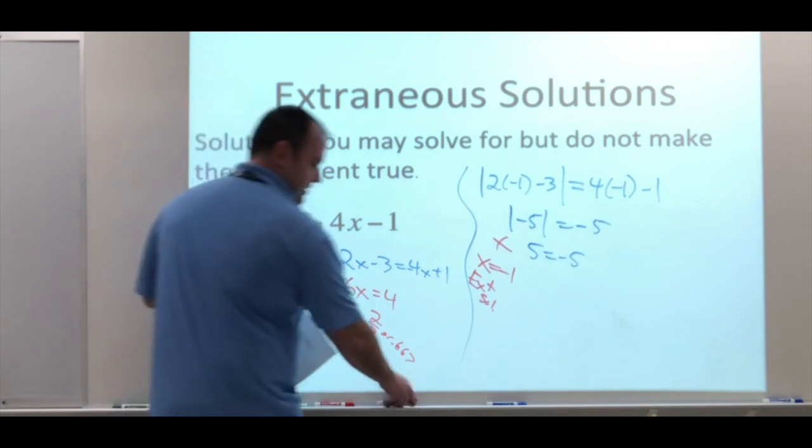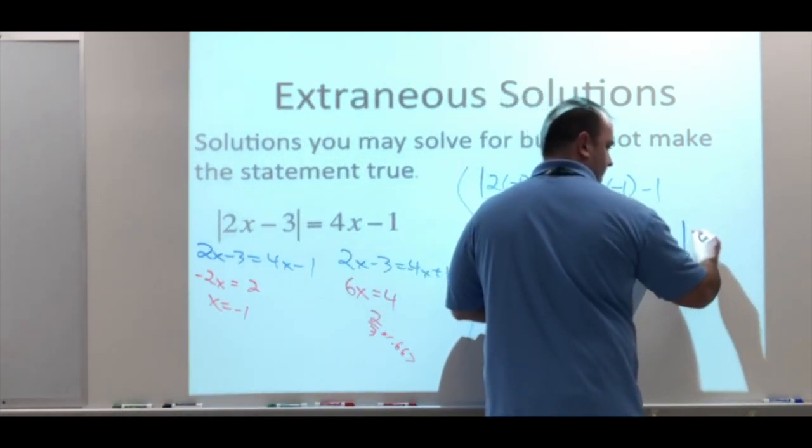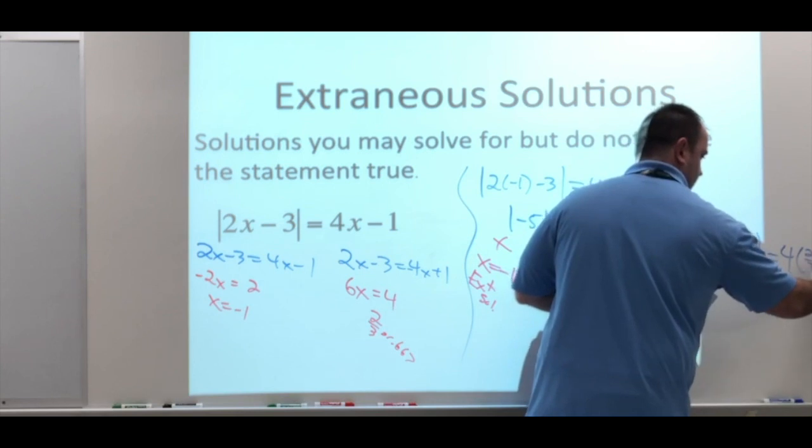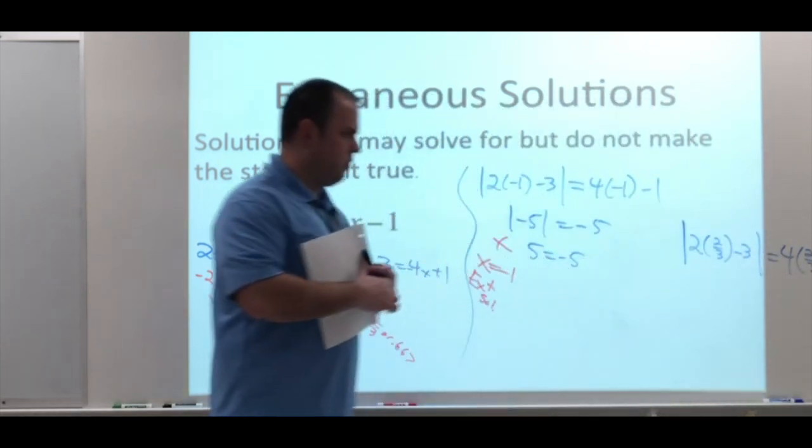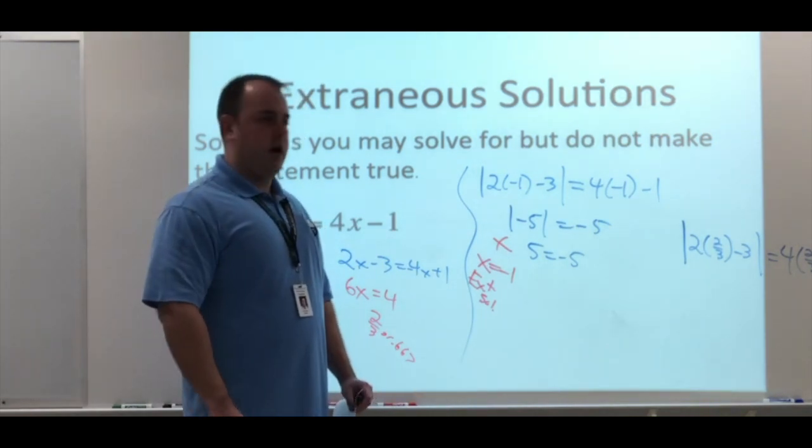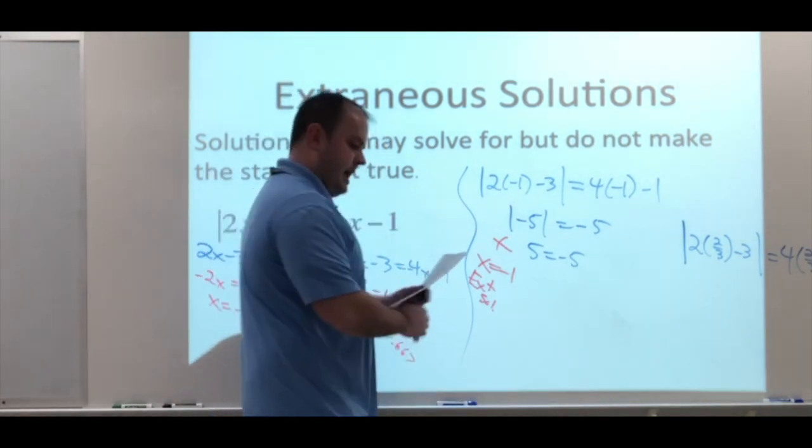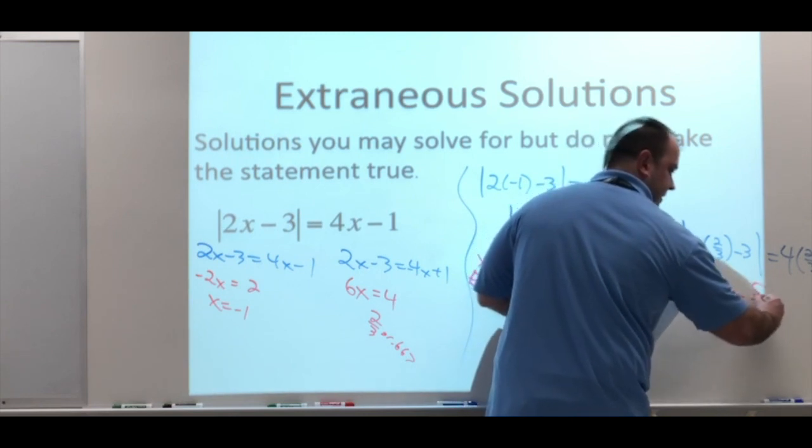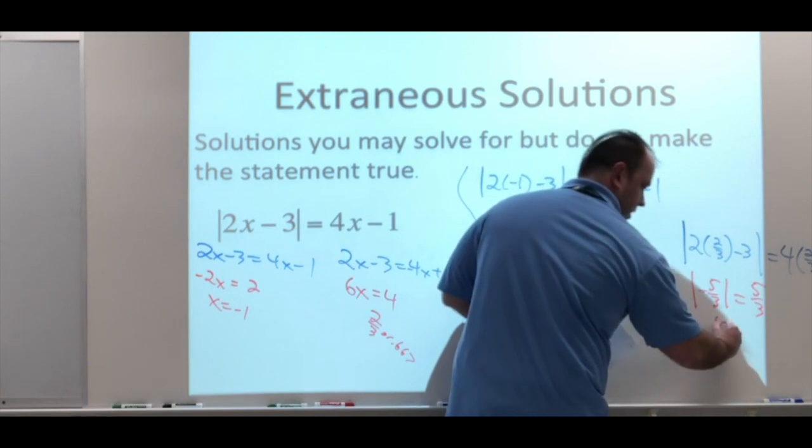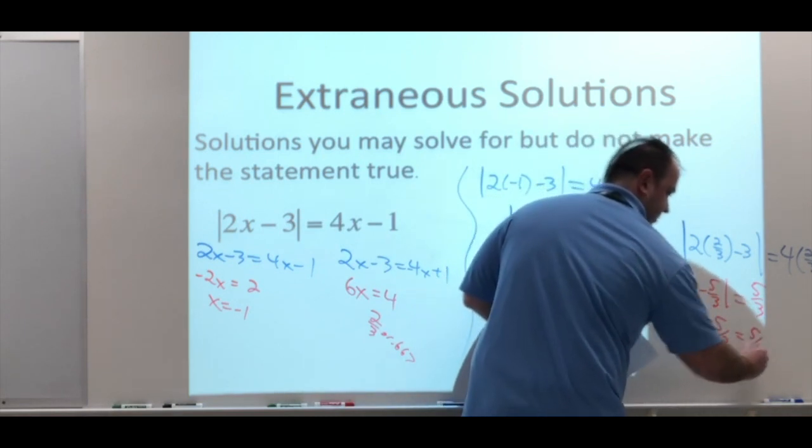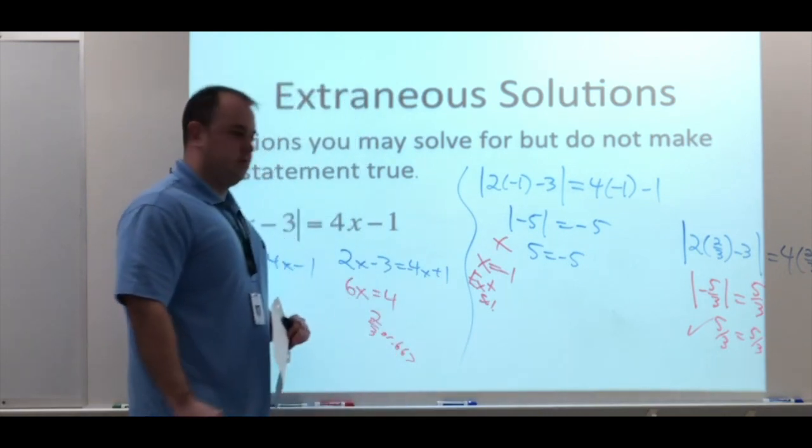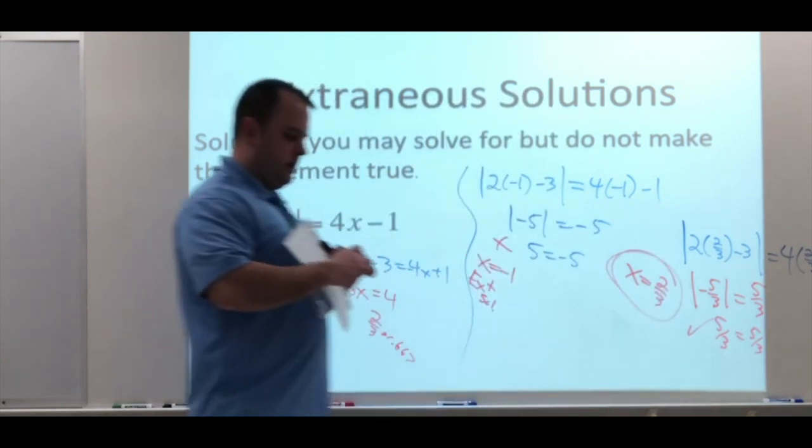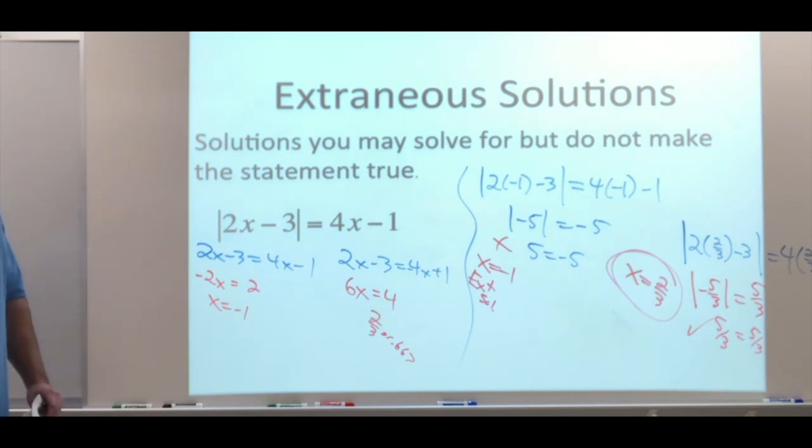And now, let's check the other one. Let's check the 2 thirds. Again, going through the work, take your time dealing with fractions. I know we'll have to deal with them every once in a while, so take your time working through that. We should get absolute value of 5 over 3, negative 5 over 3 equals positive 5 over 3. Absolute value negative 5 over 3 is 5 over 3, 5 over 3. This one works. So x equals 2 thirds, that's a true solution that we're going to use.